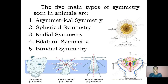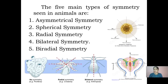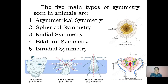The five main types of symmetry seen in animals are asymmetrical symmetry, spherical symmetry, radial symmetry, bilateral symmetry, and biradial symmetry. In asymmetrical symmetry, as seen in sponges, symmetry is not possible because of the irregularity in shape — no matter which plane we cut along, we still don't get two equal halves. Moving on to spherical symmetry, the example here is protists such as Thalassicola — the body is like a ball, and any plane passing through the center yields equal halves.